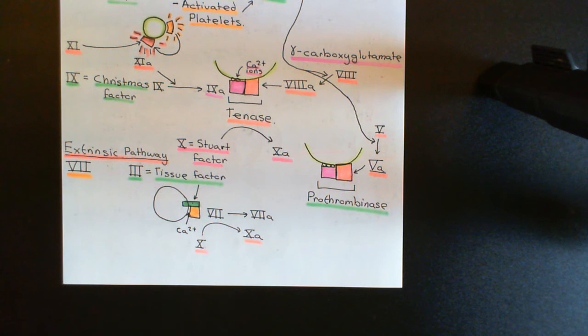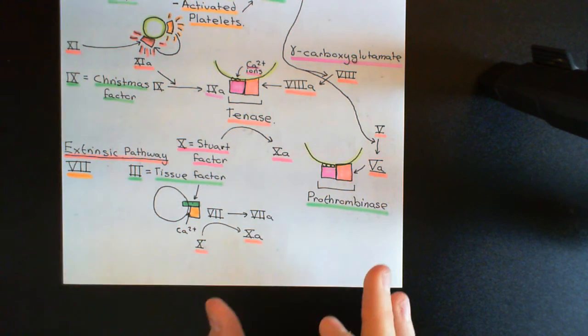we've then got the intrinsic and extrinsic cascades here, which are resulting in the conversion of this inactive protein fibrinogen into the active fibrin monomer, which then assembles into these fibrin meshes. And that's going to form this spider's web that will intertwine with the platelets to give it some strength.